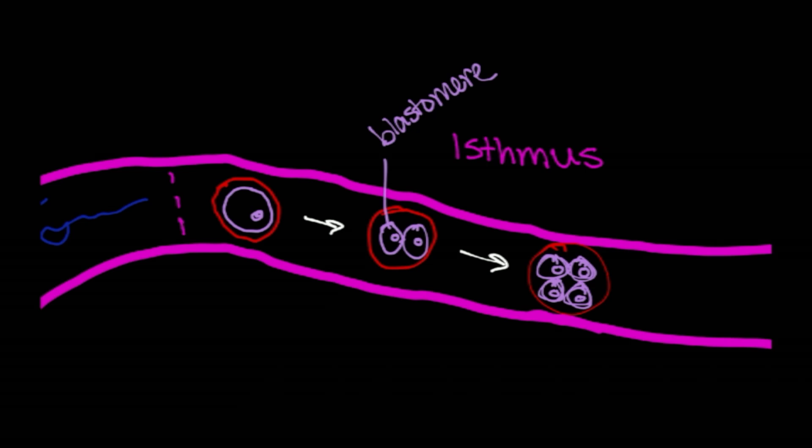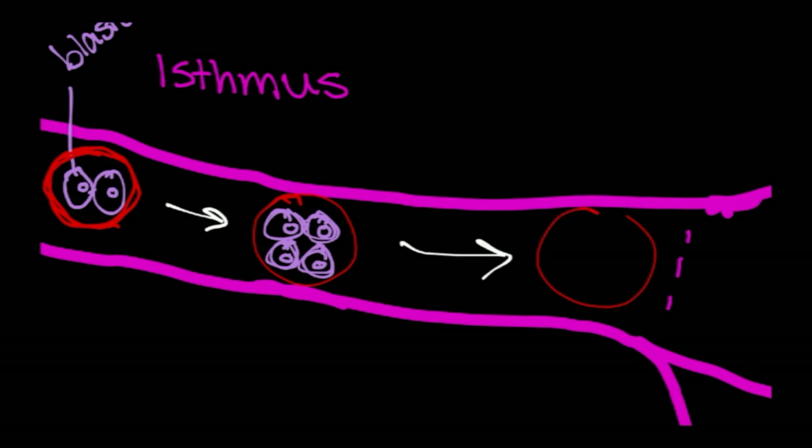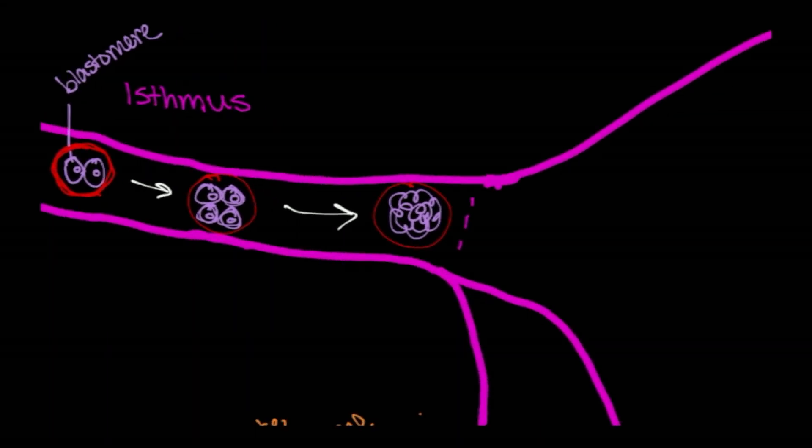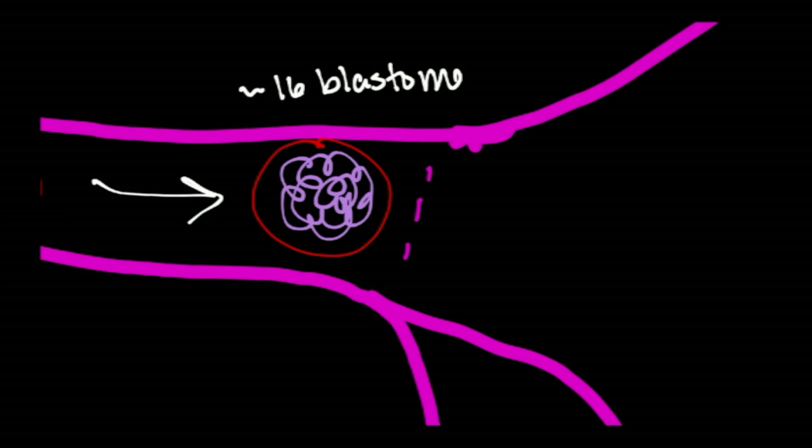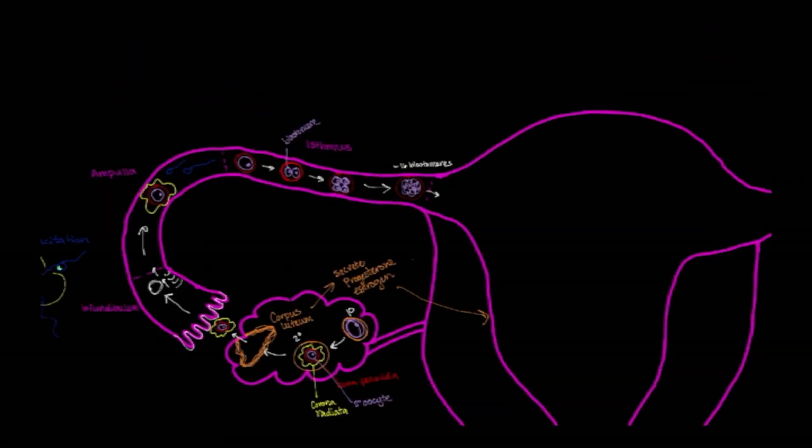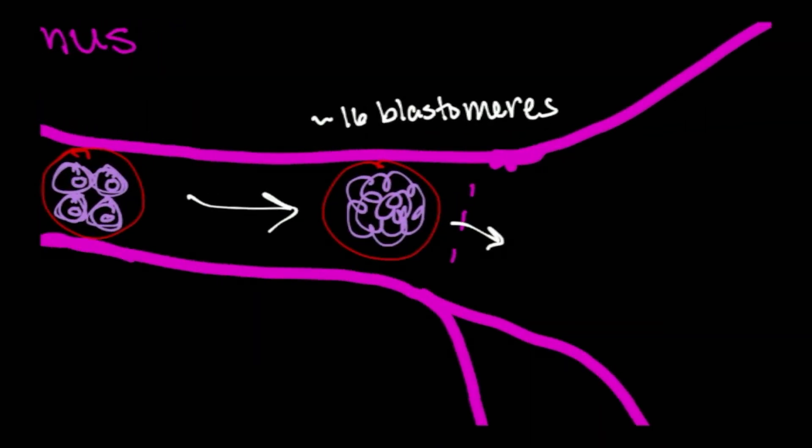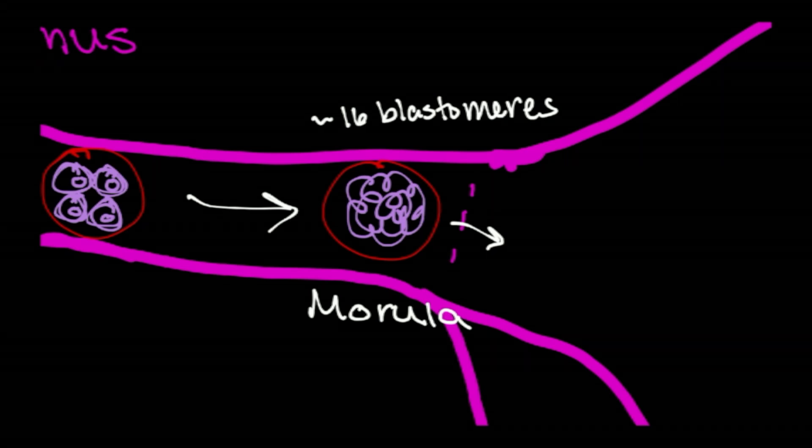As these blastomeres increase in number, the actual size of the cell itself, of the zygote, does not change. So as you can imagine, as more and more cells are added into this structure, they're going to become more and more compact. And just about the time at about the, when there's about 16 blastomeres. And just as it's about to enter into the uterine cavity here, it is now called a morula. And this is at about day four.